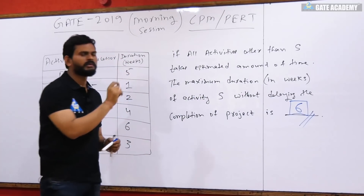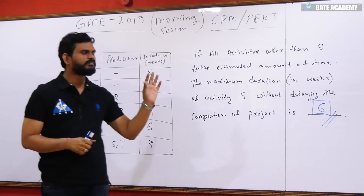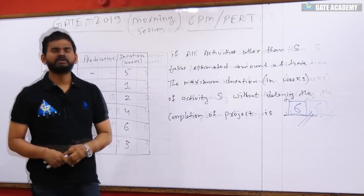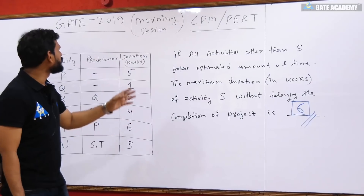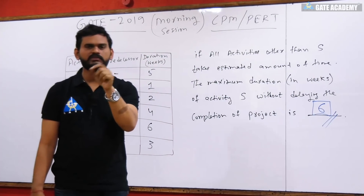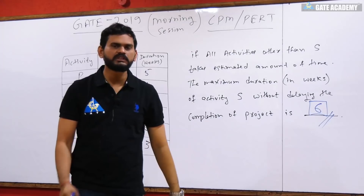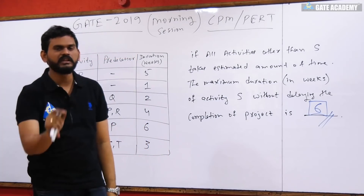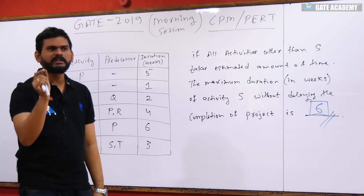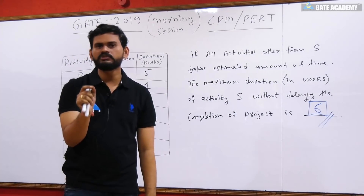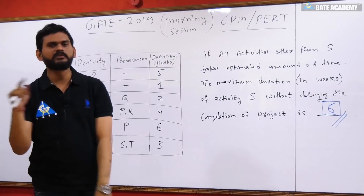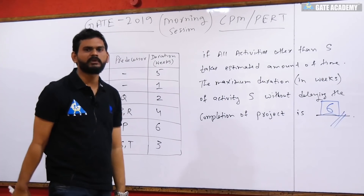Six weeks is the right answer — maximum duration of S will be six weeks. This was a simple problem: you only had to compare the longest path with the second longest path. This was the Gate 2019 morning session CPM problem. Next, in the afternoon session video, I will also show the CPM problem from the afternoon session, which was even more interesting.